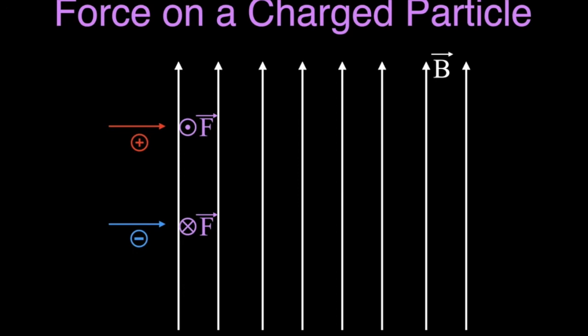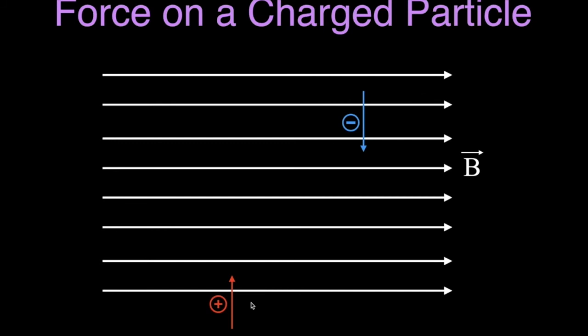For the next positively charged particle, I take my right hand, point my thumb up, and turn my hand so my fingers are pointing to the right. Now I'm looking at the back of my hand — my palm is facing into the page — so the force on that charged particle is into the page. For the negatively charged particle with thumb pointing down and fingers to the right using my left hand, I'm again looking at the back of my hand with palm facing into the page, so the force is also into the page.